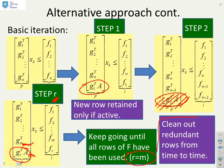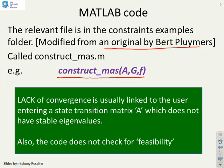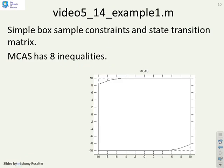We want to clean out redundant rows from time to time. I'm not going to say exactly how often, but on a periodic basis you want to go through the whole set of inequalities and say, do some of these rows now become redundant because of rows I've added later. We've provided a file called construct_mas, modified from an original by Bert Ploymus. If when you run this file you seem to be not getting convergence, the usual error is your state transition matrix A has not got stable eigenvalues. The code does not check for feasibility. The structure takes the transition matrix A and sample constraints G and F.